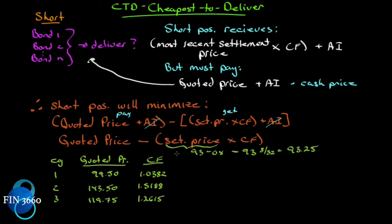To work through the example, we'll assume a settlement price on the T-bond futures contract of 93-08, which is 93 and 8/32, or 93.25. We have three bonds to choose from with their respective conversion factors. Looking naively, bond 1 appears to be the cheapest bond and bond 2 the most expensive, so one might think to just deliver bond 1 — but let's work it out properly.